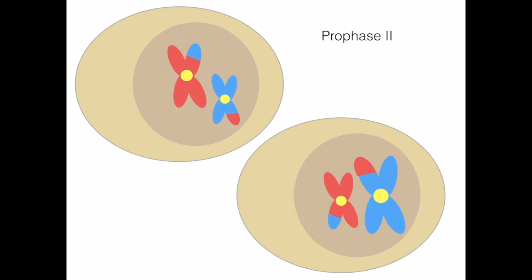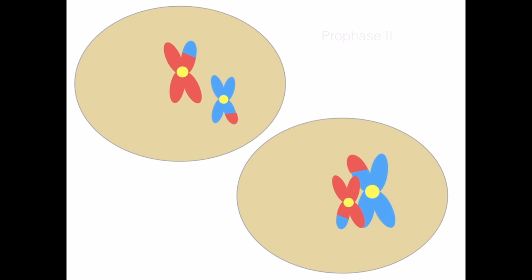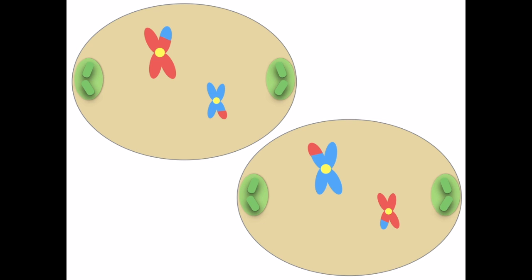During prophase 2, like prophase 1, the nuclear membrane breaks down and centrosomes form.